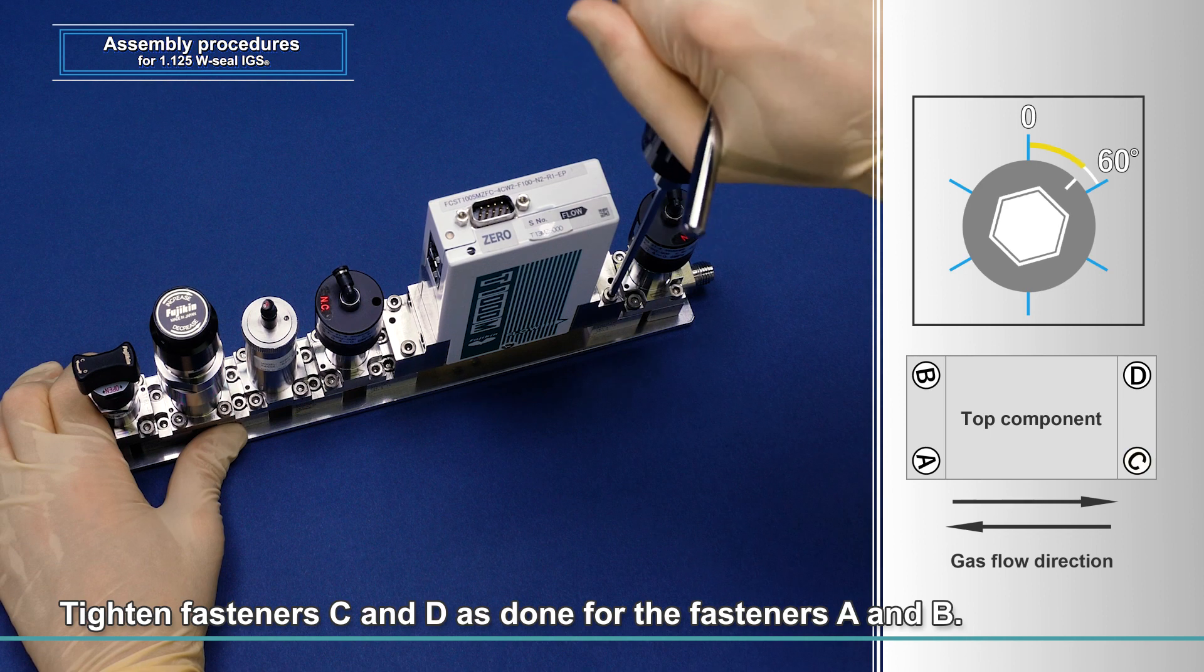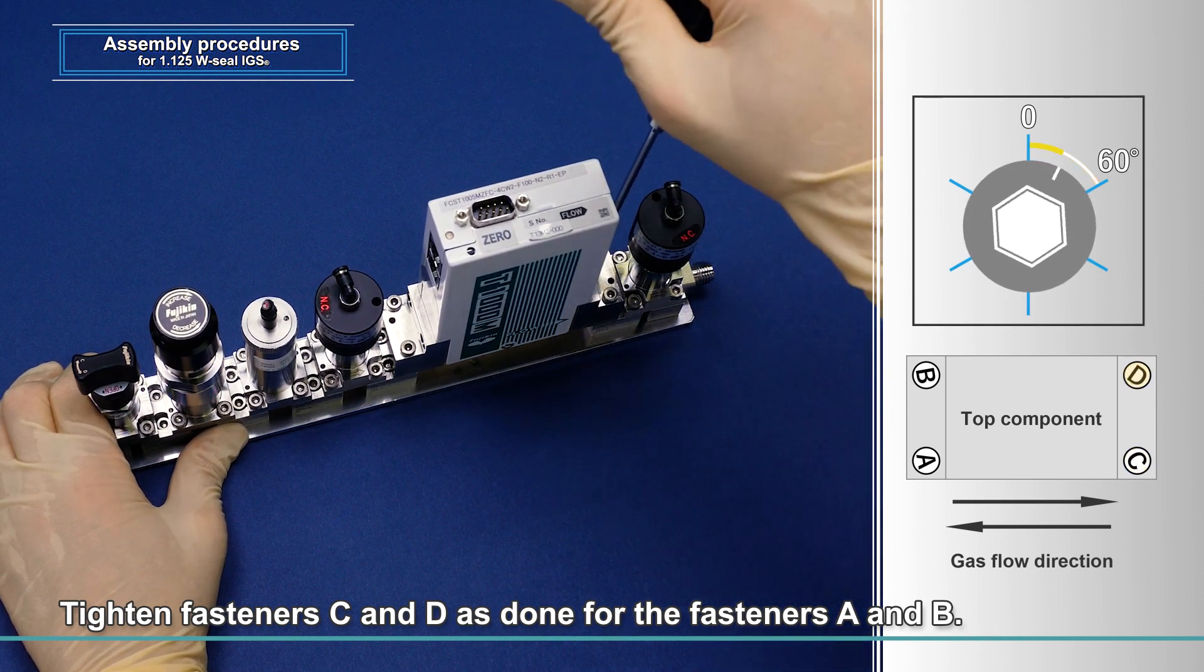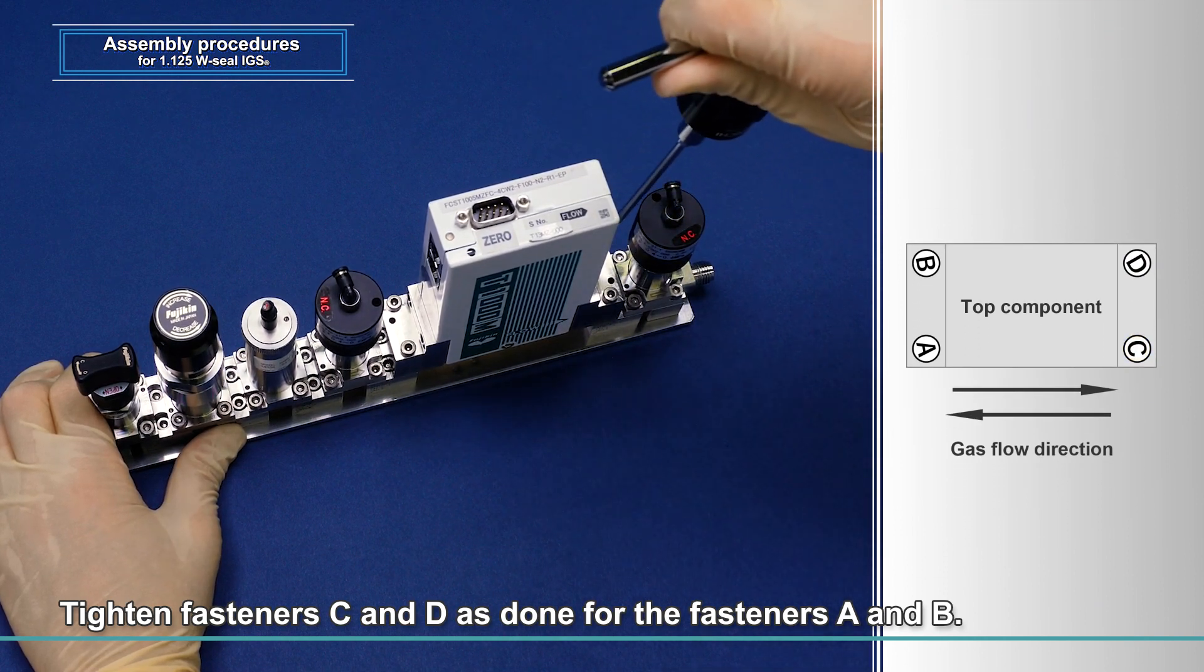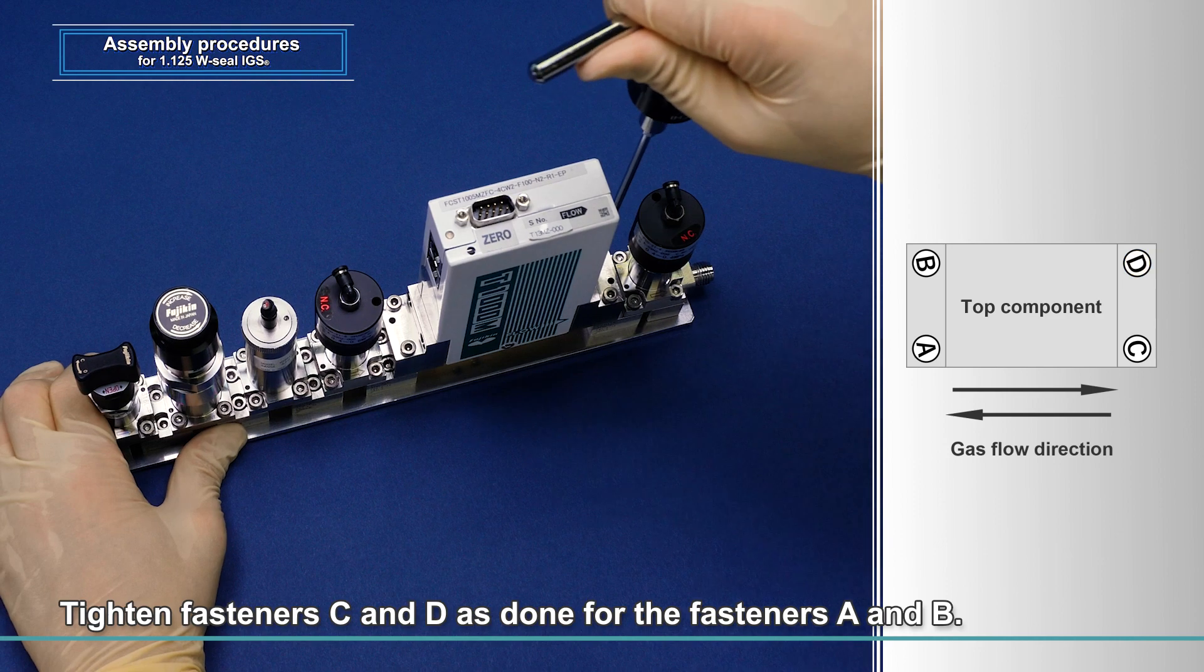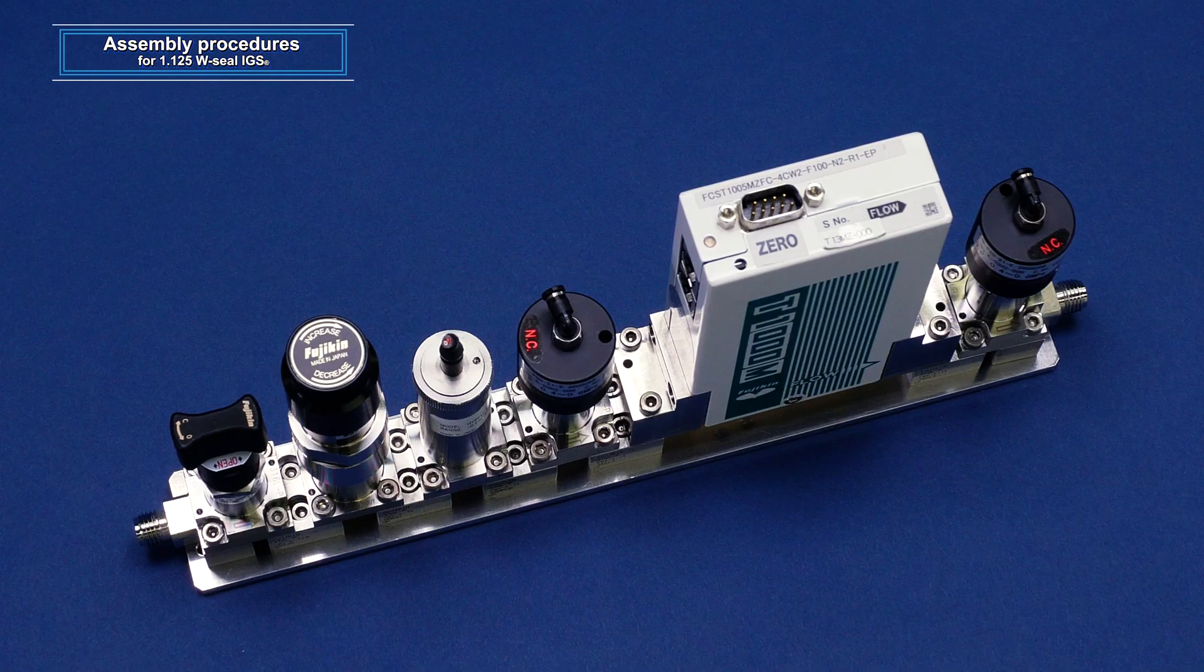Tighten fasteners C and D just in the same way as done for fastener A and B, to complete the entire procedures.